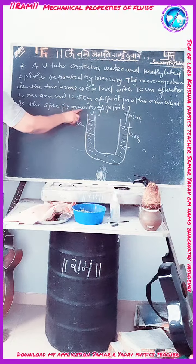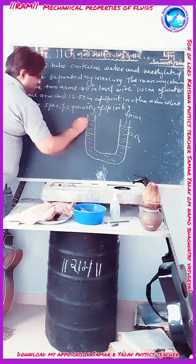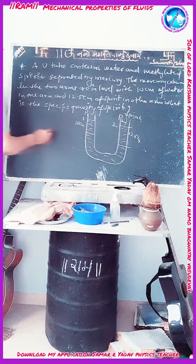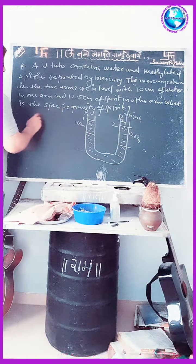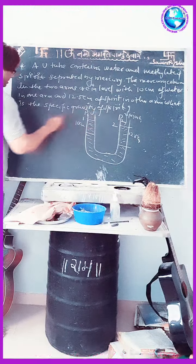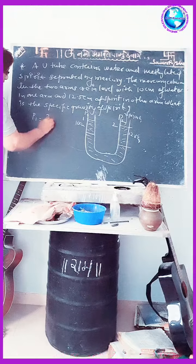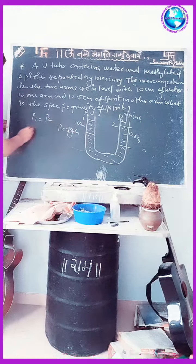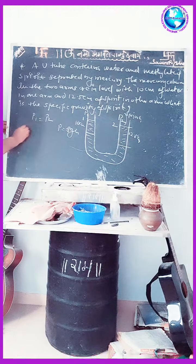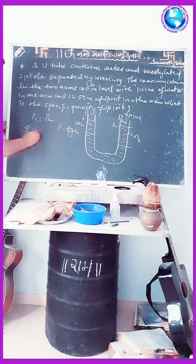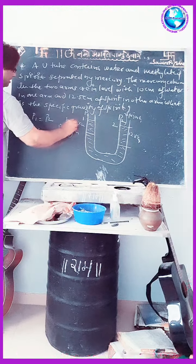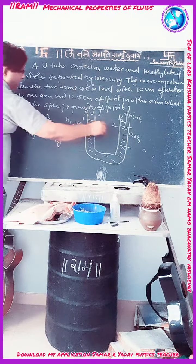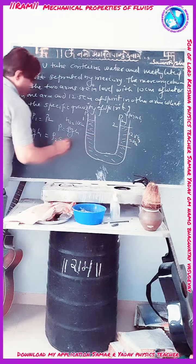What is the specific gravity? Now the pressure at this point — suppose this is point 1 and this is point 2. Pressure at point 1 is P1 and at point 2 is P2. Because at equilibrium both have the same pressure, we can write P1 equals P2. We know that pressure equals rho times G times H. So P1 is rho1 times G times H1, and P2 is rho2 times G times H2.